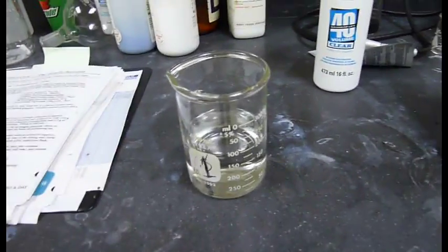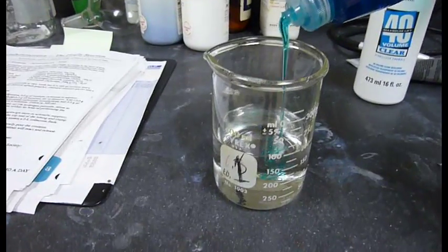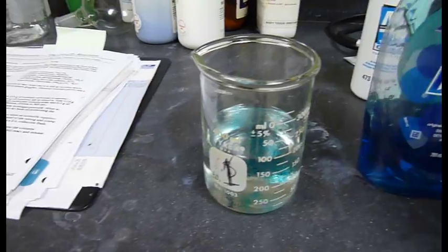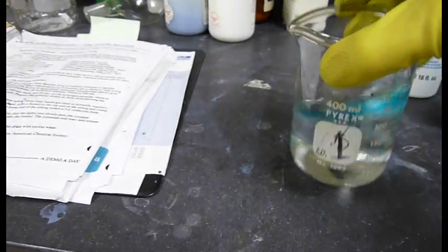To the concentrated peroxide solution, add a couple squirts of some blue dish soap. I like Dawn, seems to work the best. Give it a little swirl.